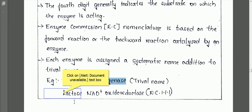That's why the International Union of Biochemistry and the Enzyme Commission combinedly submitted a report in the year 1964 for the nomenclature and naming of enzymes.